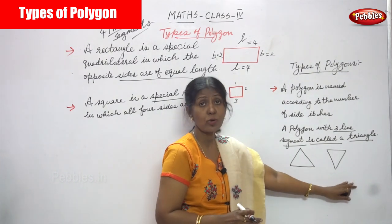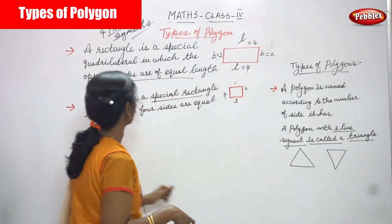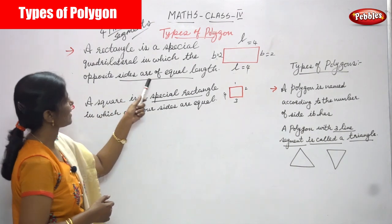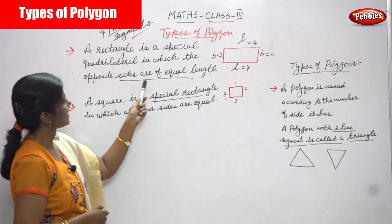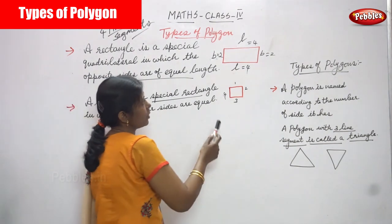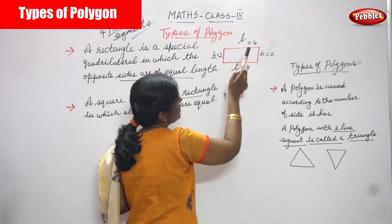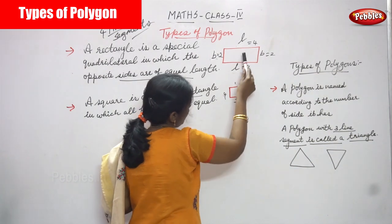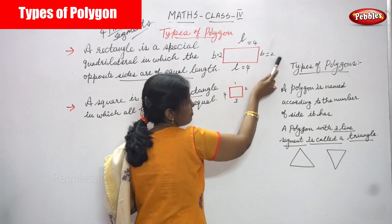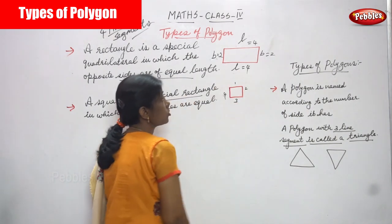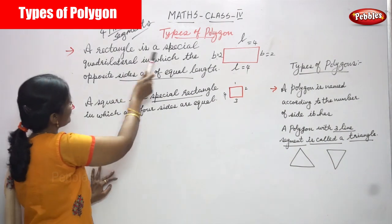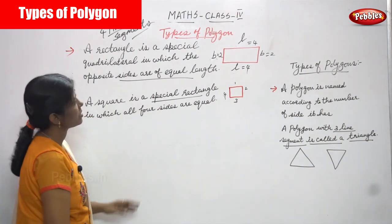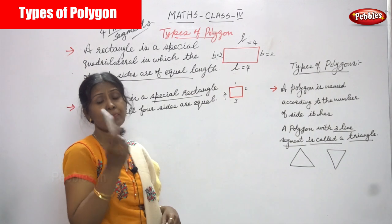This is a triangle, and this is also a triangle but upside down. Now for four line segments: a rectangle is a special quadrilateral in which the opposite sides are of equal length. It has four sides. Length L equals four centimetres, so the opposite side L is also four centimetres. The breadth is two centimetres, and the opposite side of the breadth is also two centimetres. It is a type of polygon.